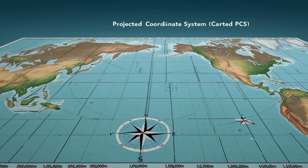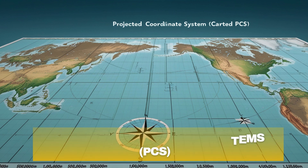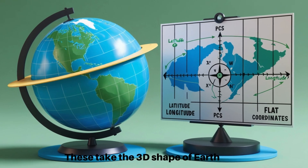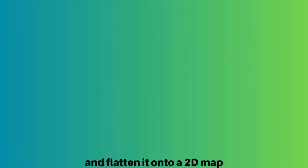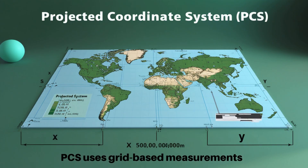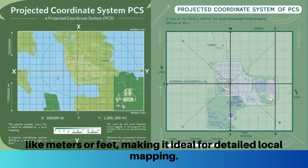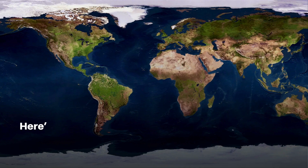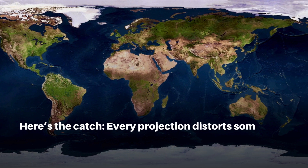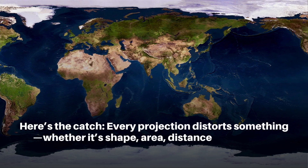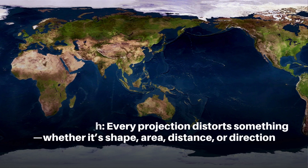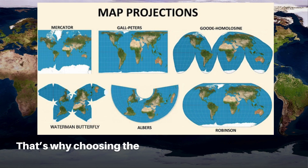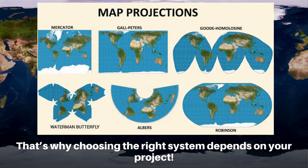Now let's talk about Projected Coordinate Systems. These take the three-dimensional shape of Earth and flatten it onto a two-dimensional map. PCS uses grid-based measurements like meters or feet, making it ideal for detailed local mapping. Here's the catch: every projection distorts something, whether it's shape, area, distance, or direction. That's why choosing the right system depends on your project.